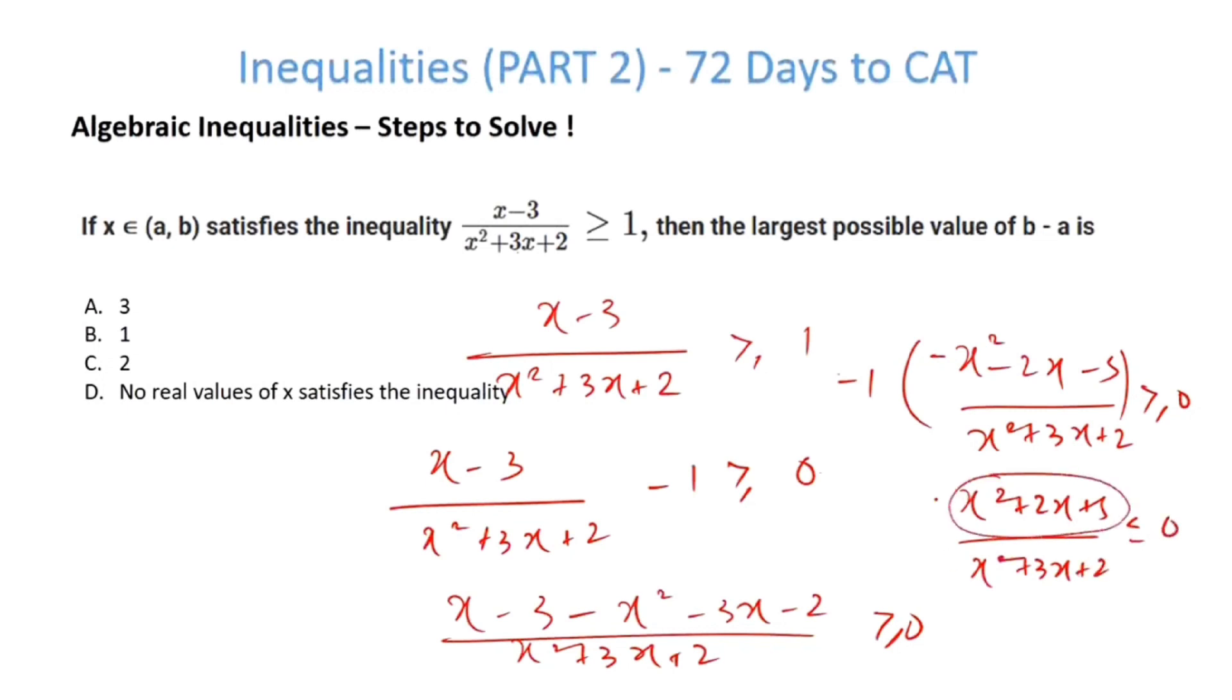Now, have a close look at this. This is nothing but x plus 1 whole square plus 4. This can never be less than 0. It will always be positive. Now, if this whole thing has to be less than 0, then x square plus 3x plus 2 must be less than 0. Now, very simply, my roots are minus 1 and minus 2. So, this will be positive, negative, positive. So, my required region is minus 1 to minus 2.